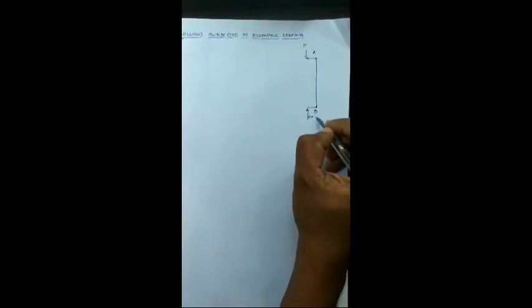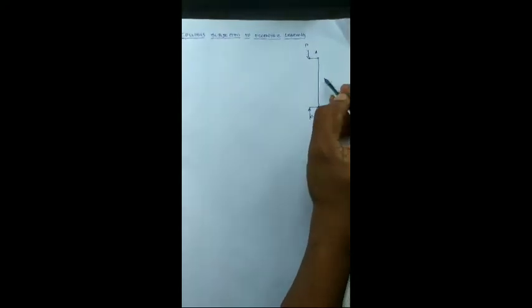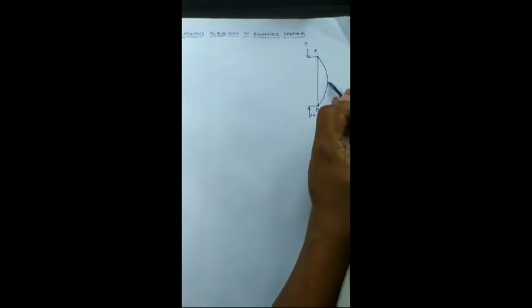Eccentricity means the load should be applied at an axis which is offset from the axis of the column. Now what happens? This column upon the application of load will buckle like this.